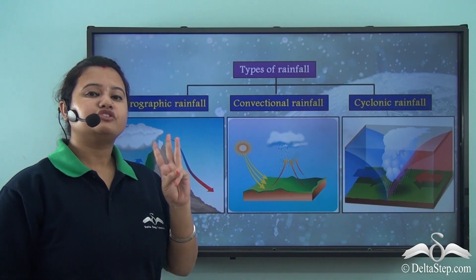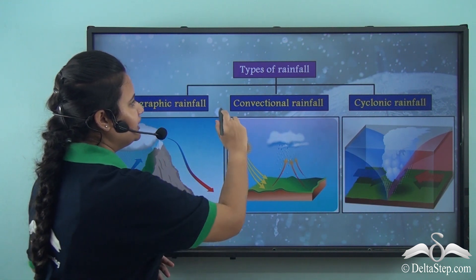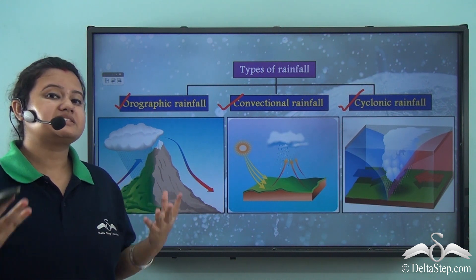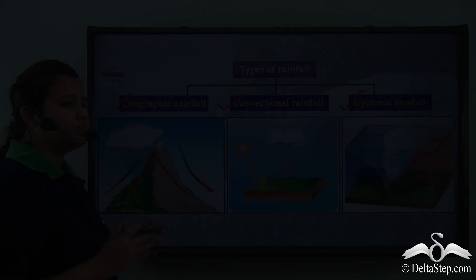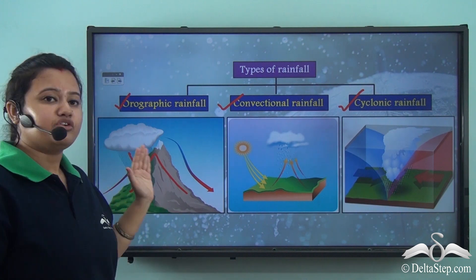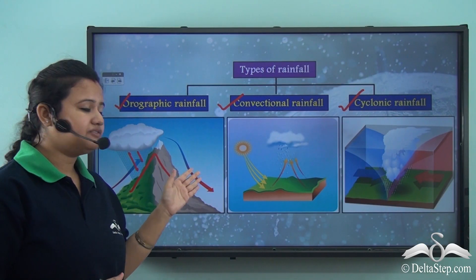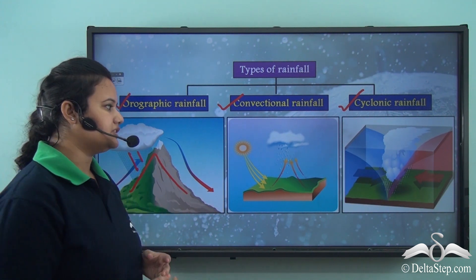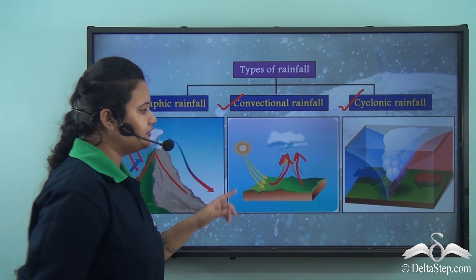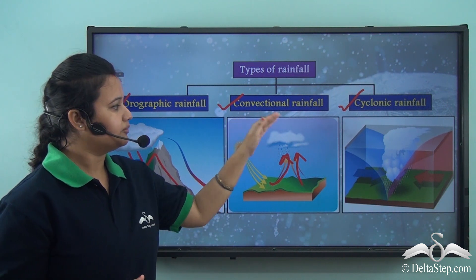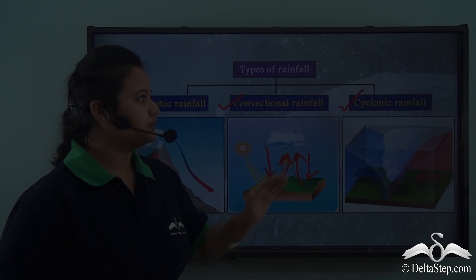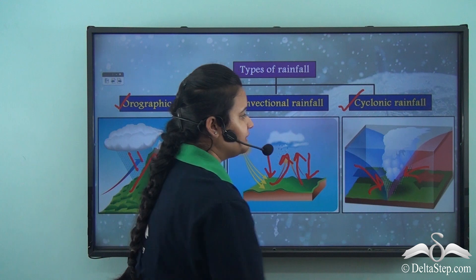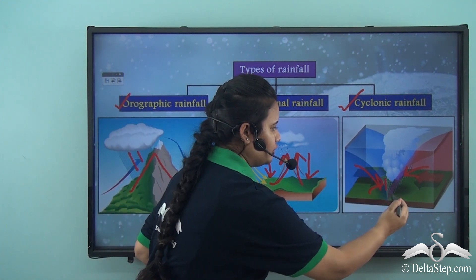The three major types of rainfall are orographic, convectional, and cyclonic rainfall. Orographic rainfall is determined by a mountain range — most rainfall occurs on the windward side, while the leeward side experiences little or no rainfall. Convectional rainfall is caused by rising warm moist air whose moisture condenses to form clouds and heavy rainfall. Cyclonic rainfall is caused by convergence of warm tropical air and cold polar air, with rainfall mostly at the convergence point.